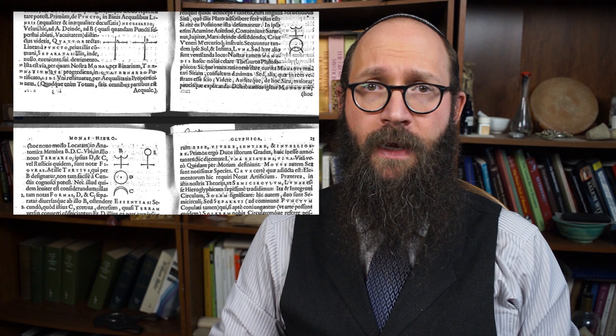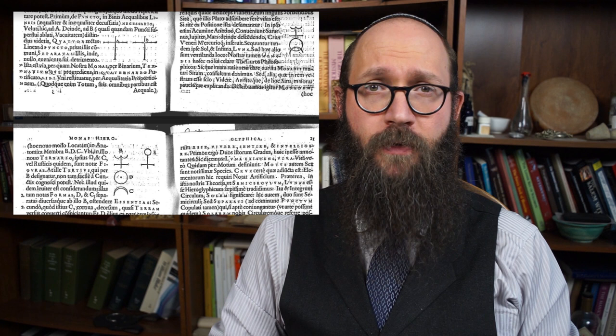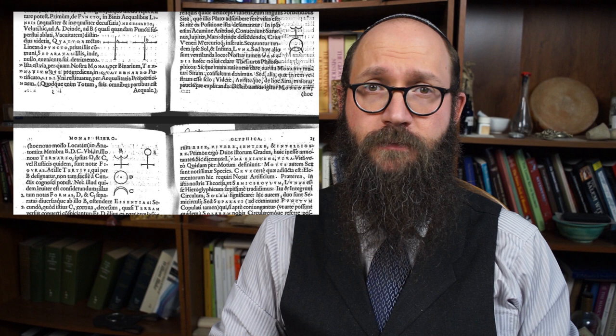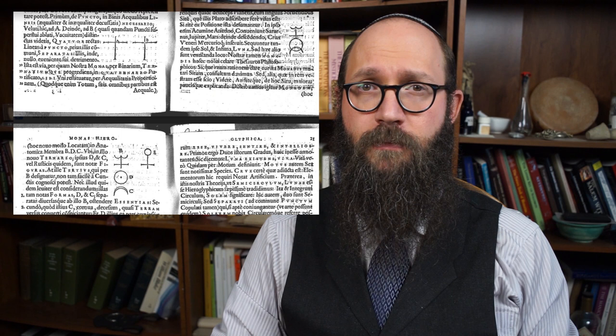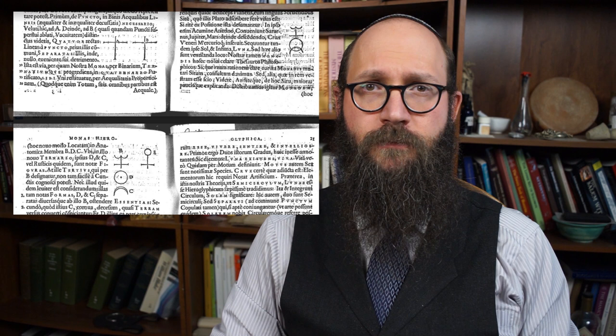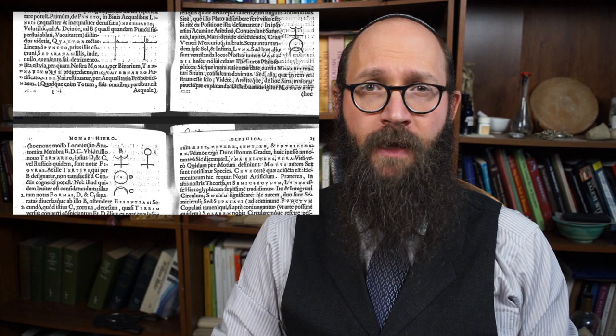I would argue that John Dee's Monas Hieroglyphica represents perhaps the most radical synthesis in the Renaissance of semiotics and metaphysics. Dee will go on to argue that because the hieroglyphic monad has such an ontological continuity with reality, manipulation of the hieroglyphic monad — the manipulation of the symbol — will actually have an effect on reality itself. Dee seems to argue that because the hieroglyphic monad is such a perfect representation of reality, one can actually decompose the monad into its various parts and then rearrange those parts as a kind of simulation of reality itself, thus deriving the natural laws of reality and discovering hidden truths about the nature of reality from the symbol of the monad itself.